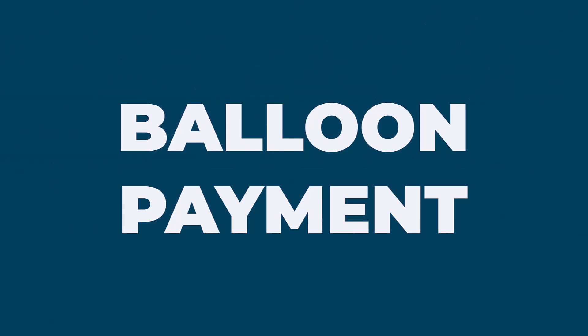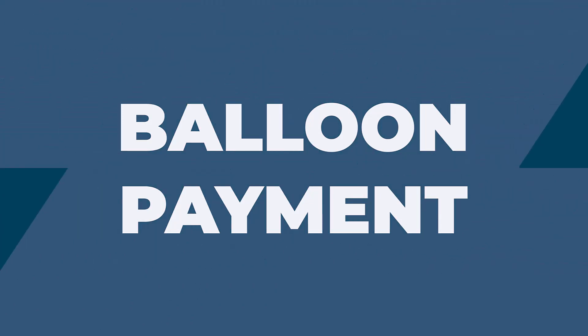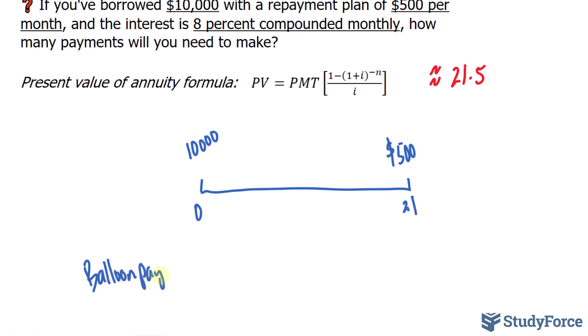We'll start with this idea of a balloon payment. A balloon payment is a slightly larger final payment made at the very end of the annuity itself. So we'll be paying $500 plus a value X that will ensure that the present value is fully paid off.